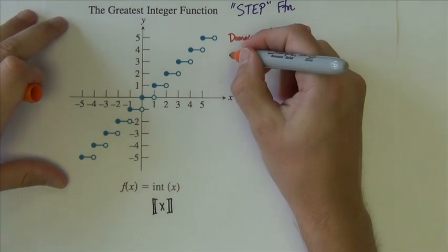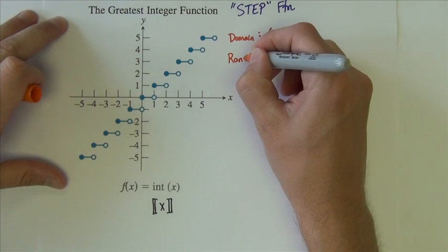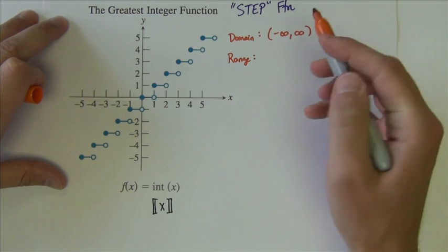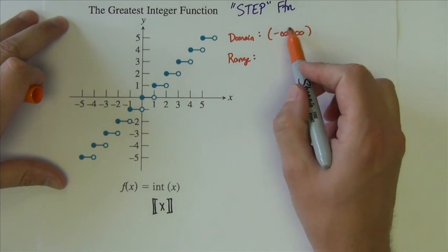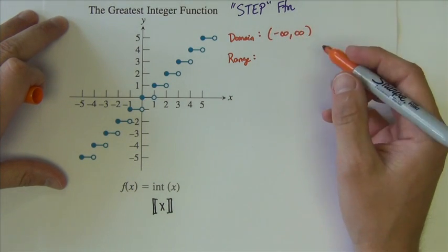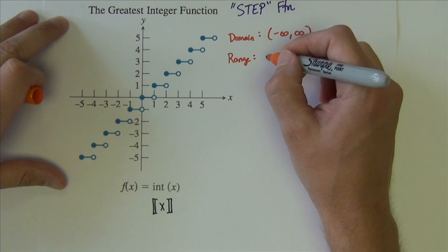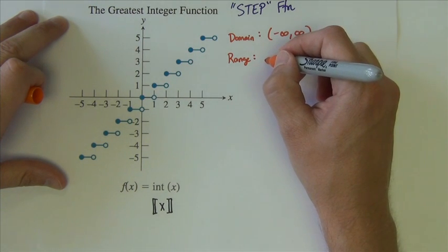Its range is somewhat unique. I'm not going to write it in interval notation, it's the only one I'm not going to write it like that. I would say its range, I would describe it this way.